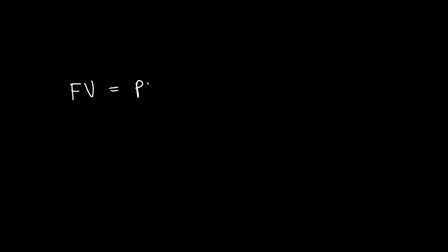Before we begin, let's recap the compound interest formula. The compound interest formula is FV = PV × (1 + i/m)^n, where FV is the future value.